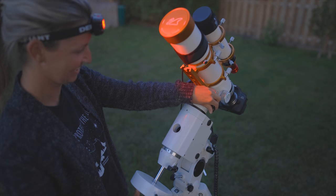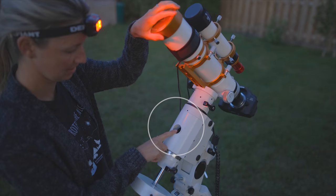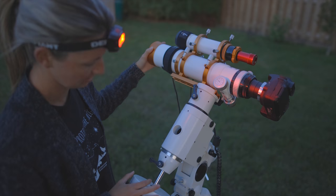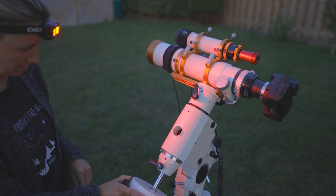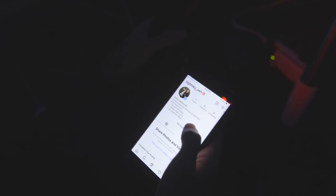On this telescope mount for whatever reason the polar scope is blocked when the declination axis is in the home position. You actually need to tilt it 45 degrees and then you can actually see through the polar axis to see the north star. Kind of important to know that one.